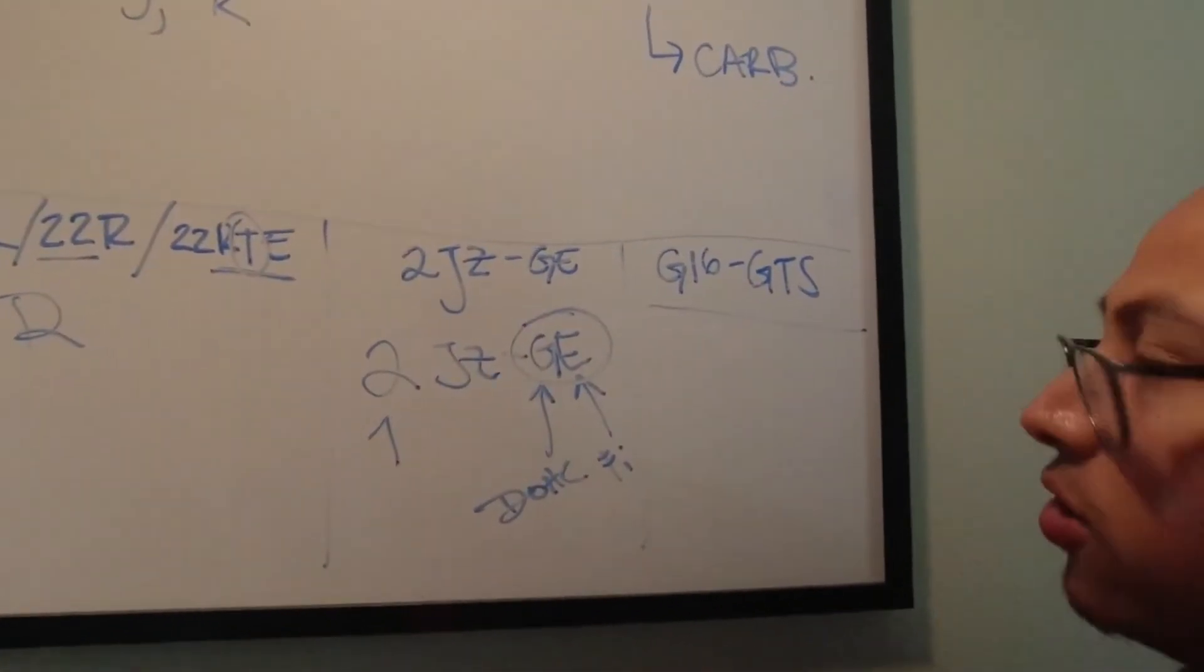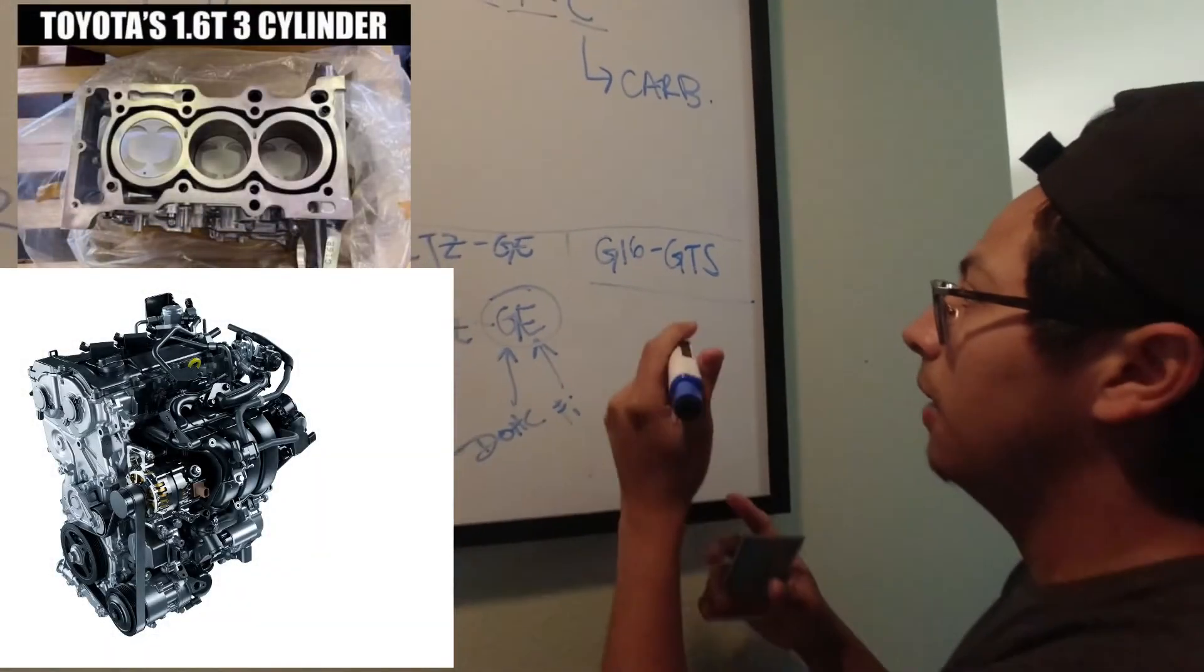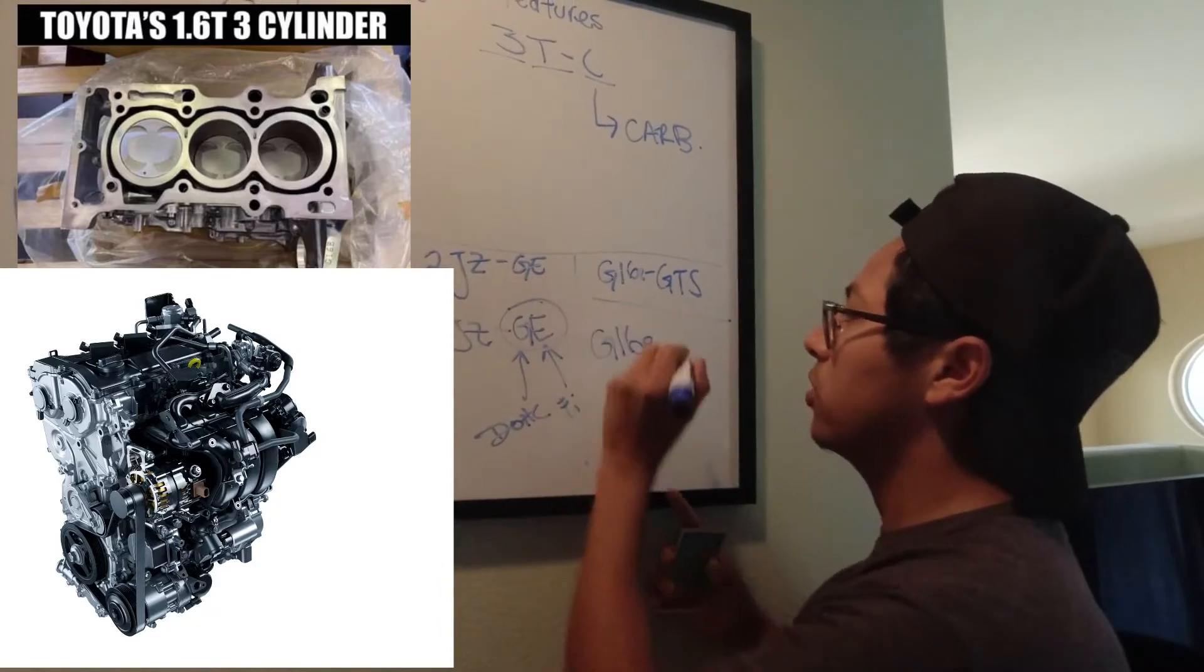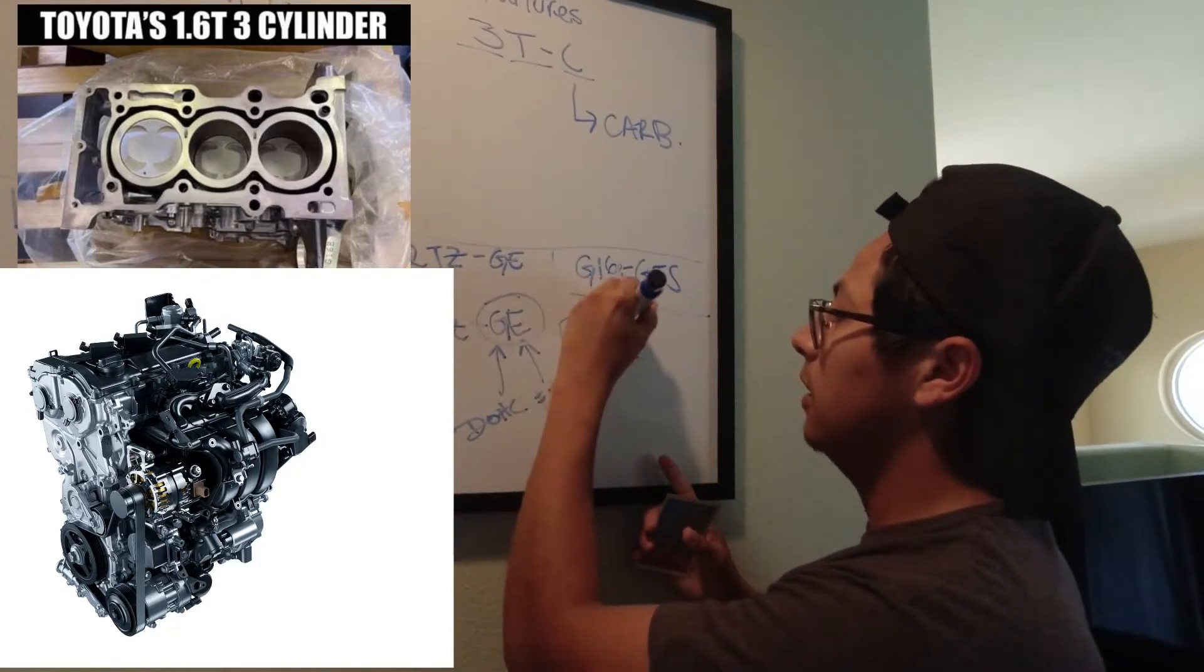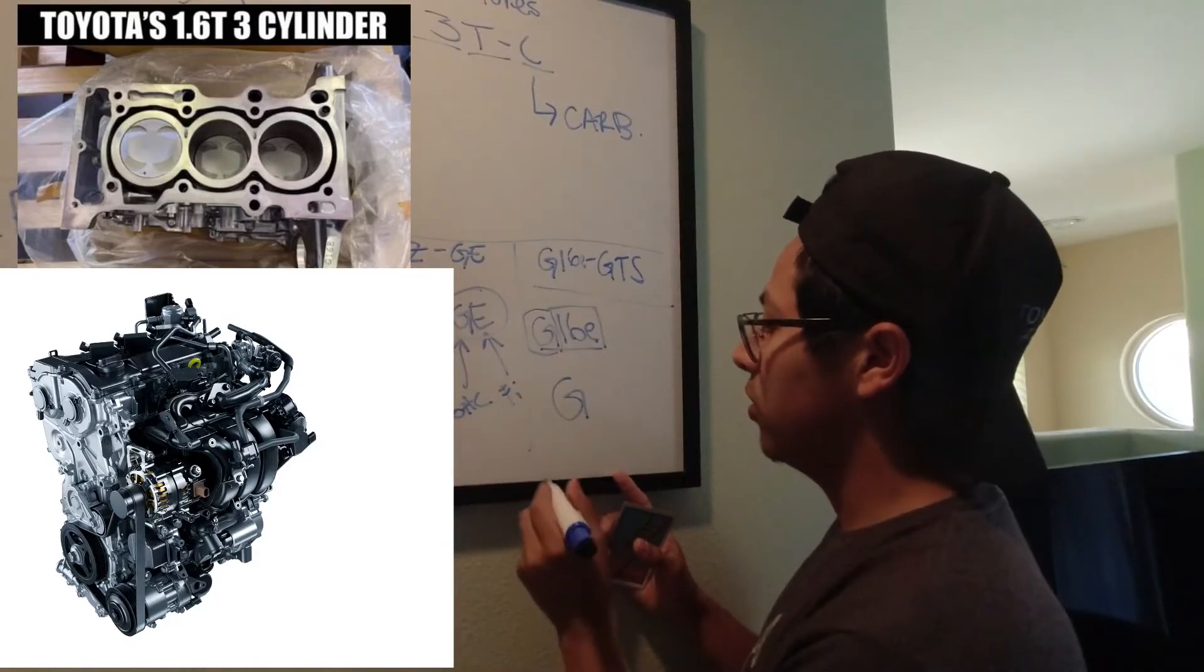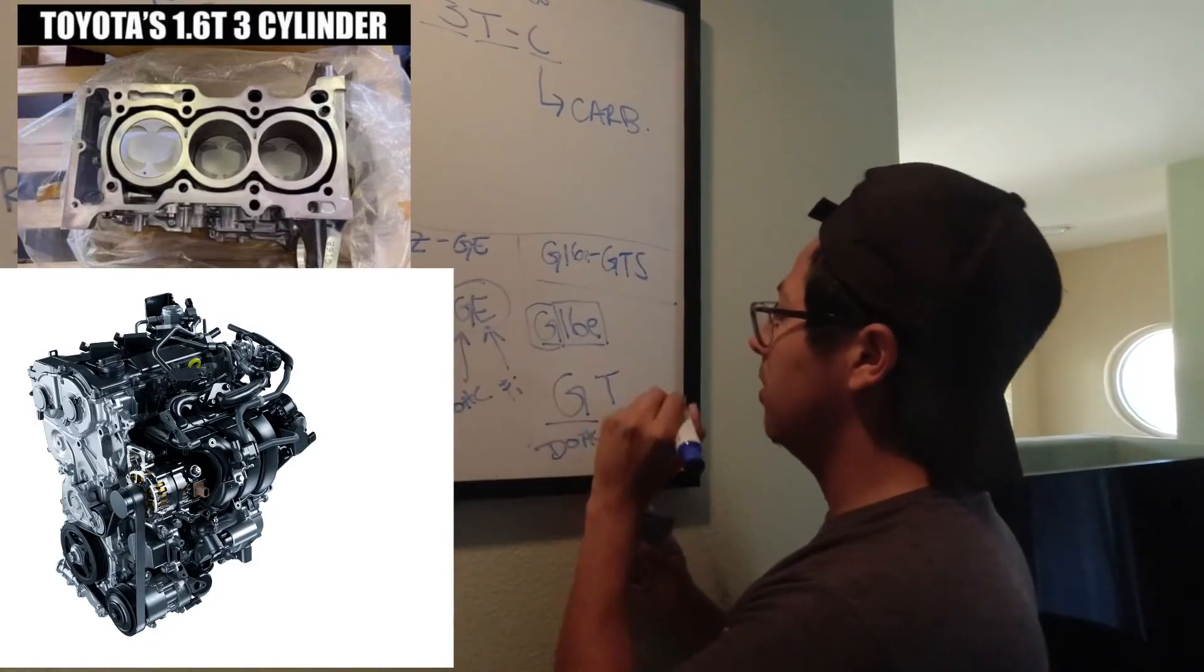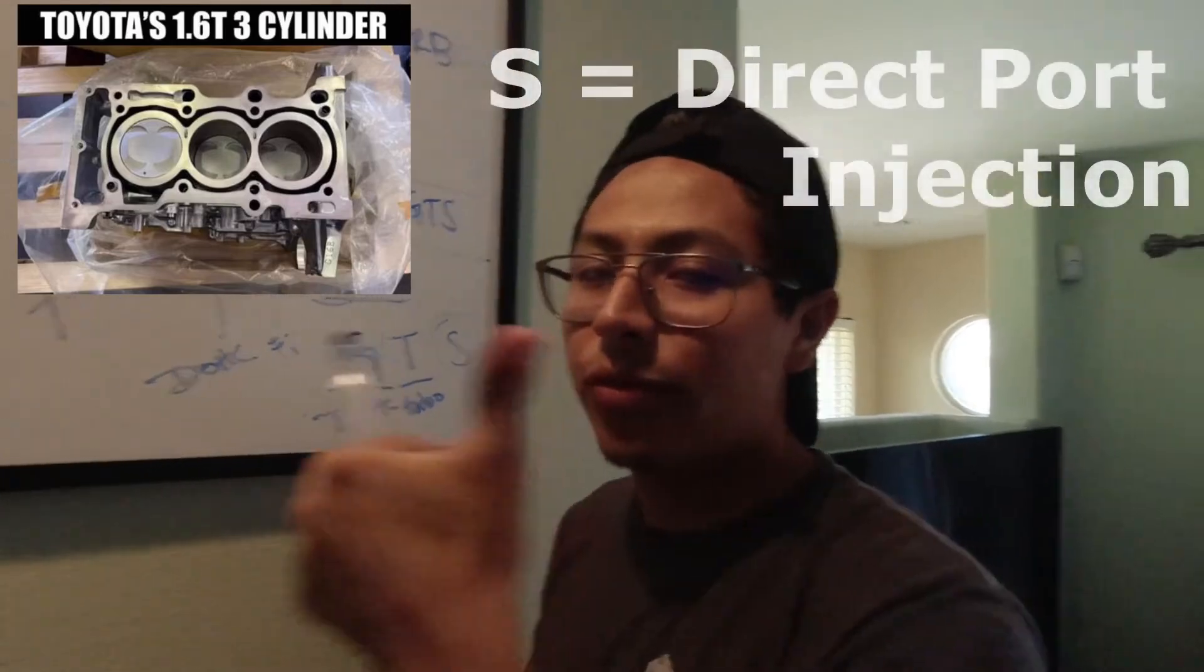Let's do the last one. This is the one coming for the Corolla GR and the one that came in the Yaris GR in other markets. To me, this is a very interesting name because there's an E in there. This is a G16E, which I believe that's going to be the revision of the block and then the engine. And then you have the GTS, which G is, like I said, dual overhead cam. And then T is turbo. And I'm actually not sure about the S. But I'll put that in the video.